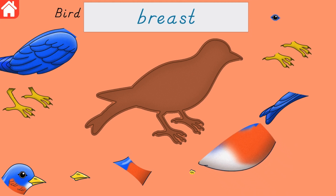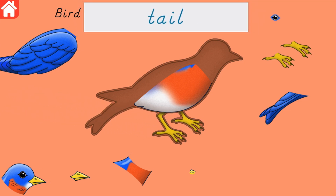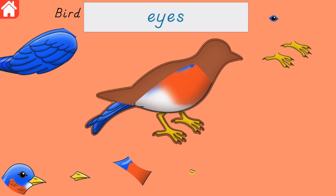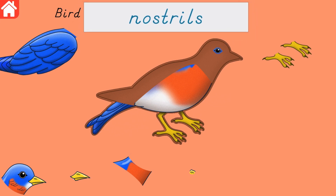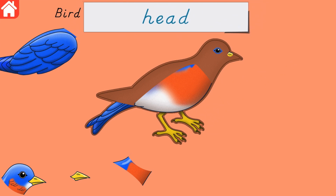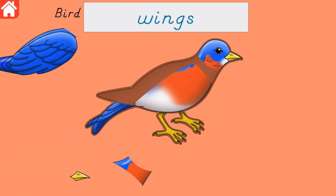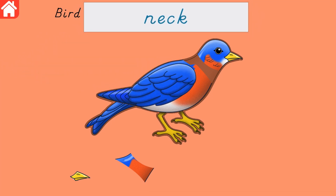Find the animal puzzle piece that matches the label shown. Breast, legs, tail, eyes, nostrils, feet, and claws. Head, wings, neck.